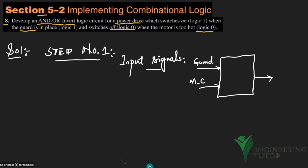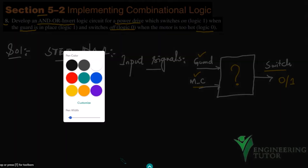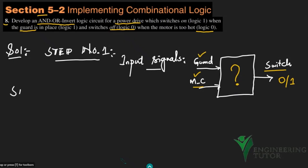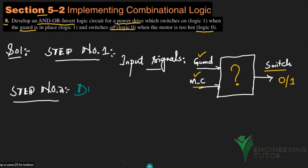The block has just one output, which is the switch. On the basis of guard and motor cool (MC) we have to determine whether the switch is on or off. That leads us to step two: draw the truth table.